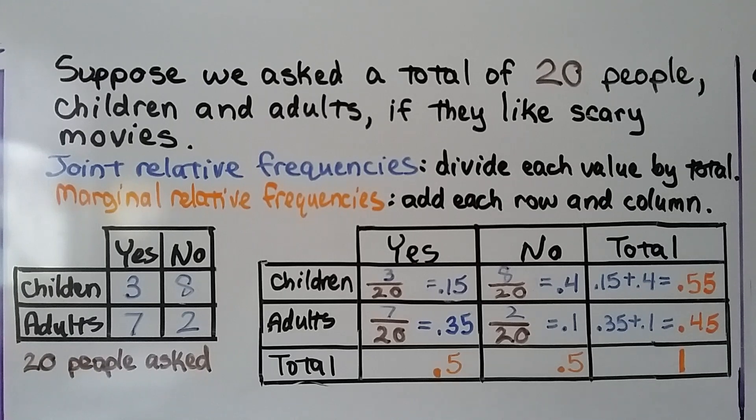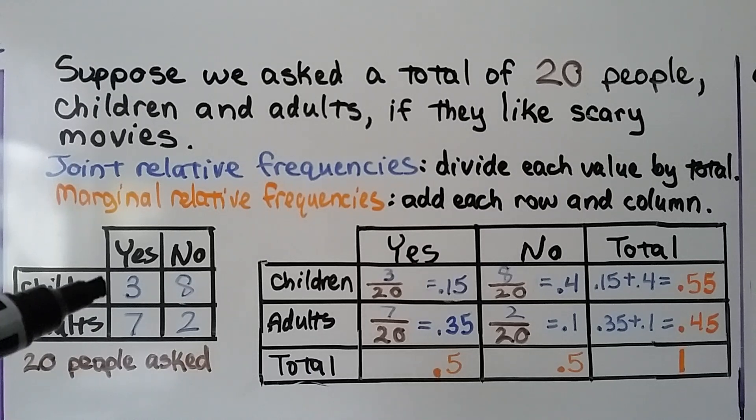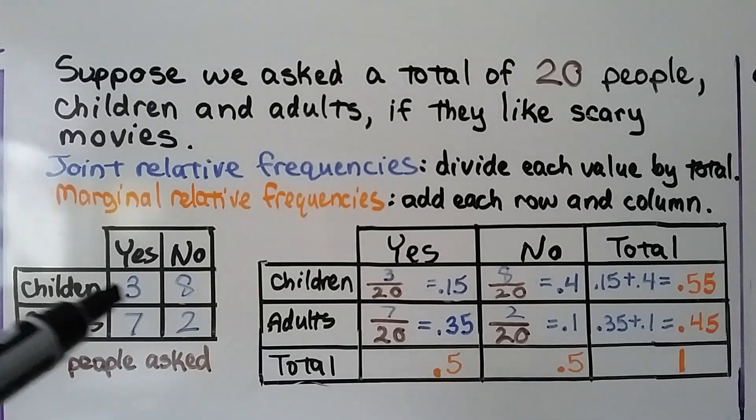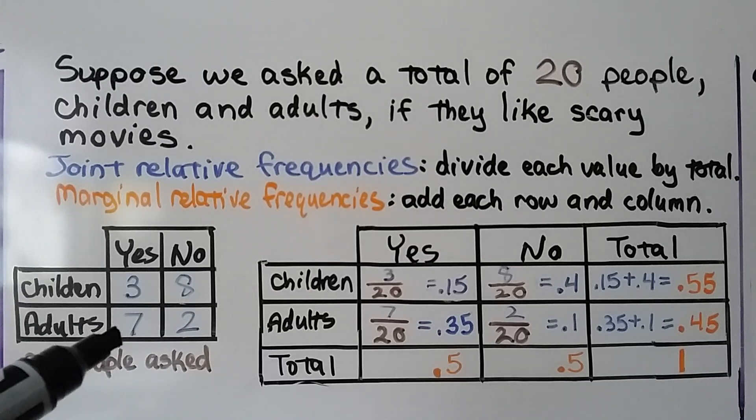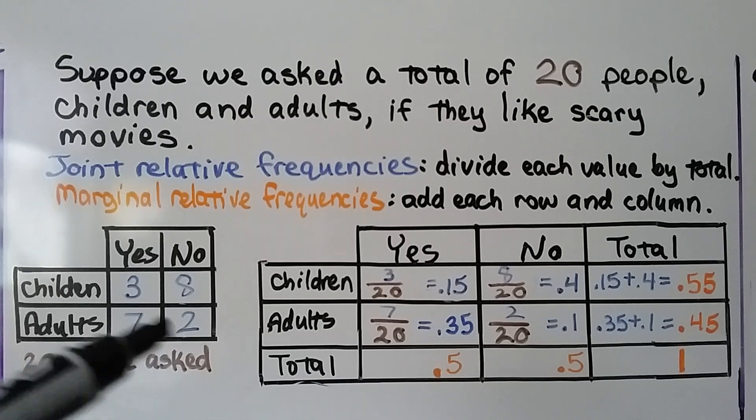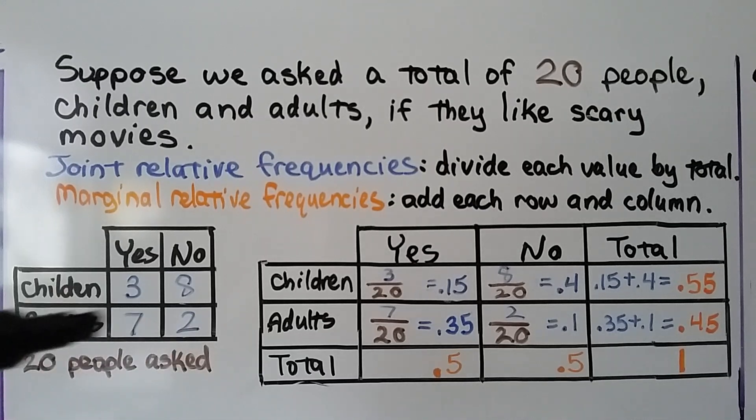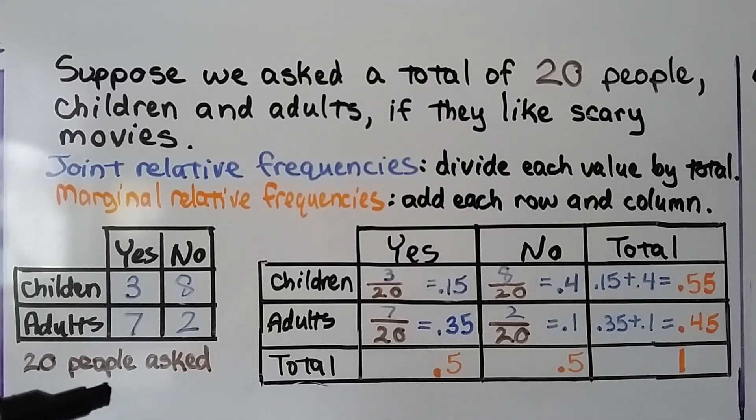Suppose we asked a total of 20 people, children and adults, if they liked scary movies. For joint relative frequencies, we divide each value by the total. So we have three children who say yes, they like scary movies, but eight say no. That's eleven children. For the adults, we have seven who say yes and two that say no. That's nine. Eleven and nine, that means we have twenty people asked.